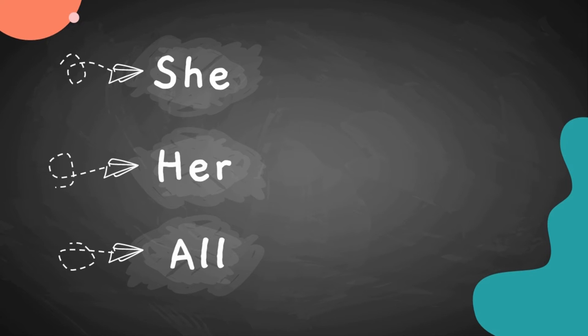We use the word she and her when we speak of a girl or a lady, a woman or a female. The word all means the whole number of something or an extent of a particular group or thing. Now let's use them in a sentence to better understand.